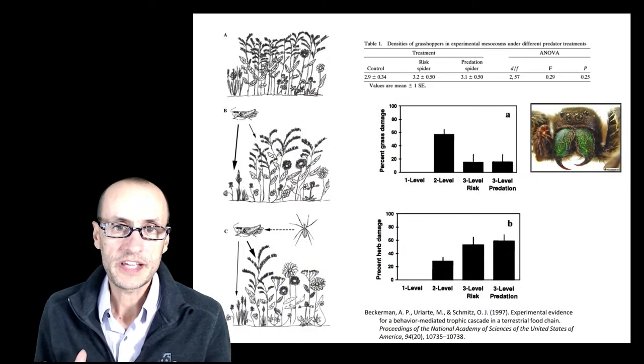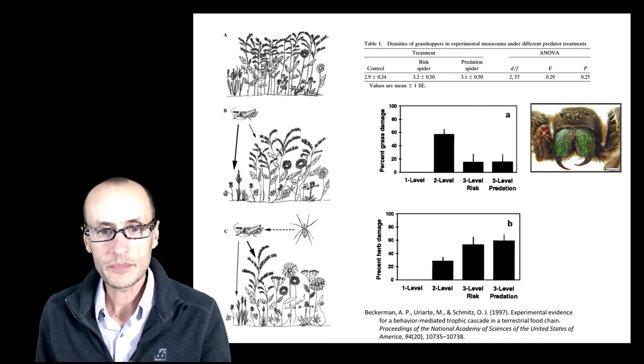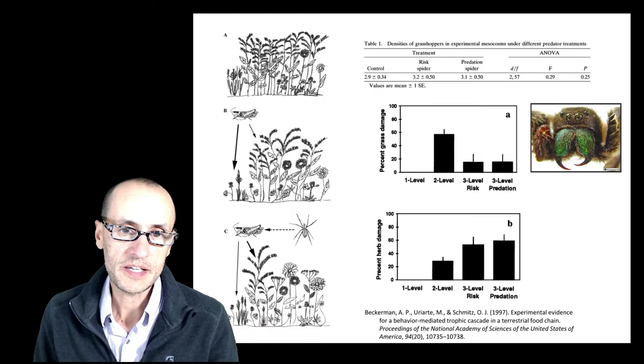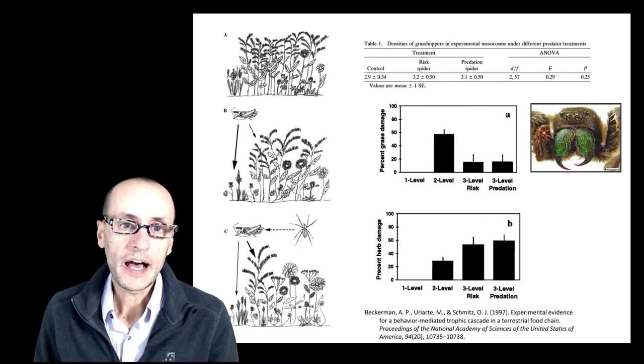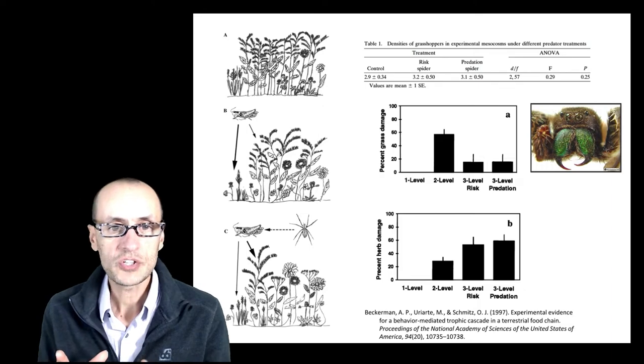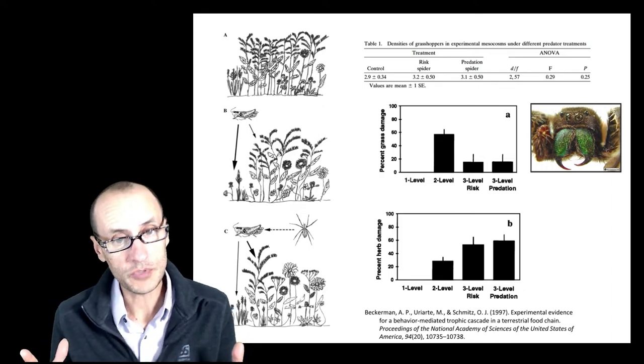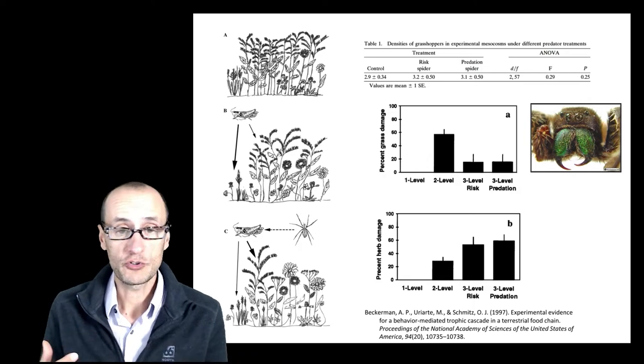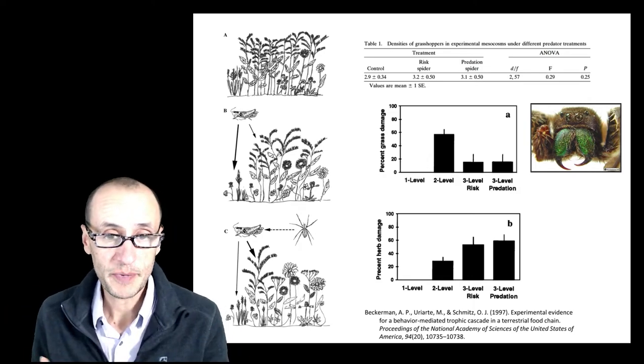So I'm going to give you a couple of examples of this. One of them is here, done by Oz Schmitz and his team at Yale University. And what Schmitz was interested in is what happens to the composition of a plant community in the presence of herbivores and in the presence of herbivores and their predators, spiders.